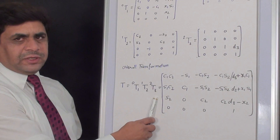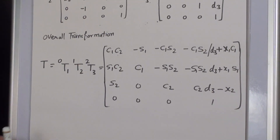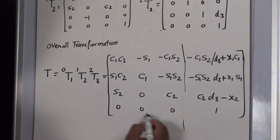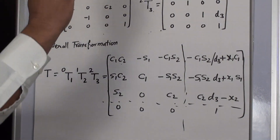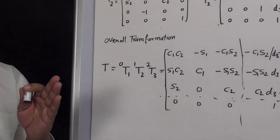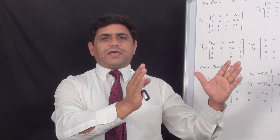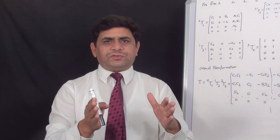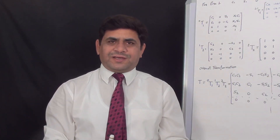The final multiplication gives us the total transformation equation showing the full kinematic analysis. The 3x3 matrix shows the orientation of the tool point P, and the vector shows the position of point P in three-dimensional space — which was the required result. This is a very important equation for direct kinematics of the manipulator. To find the inverse kinematics, you would equate this with another generalized equation, which we will discuss later. Thank you very much for your kind attention.